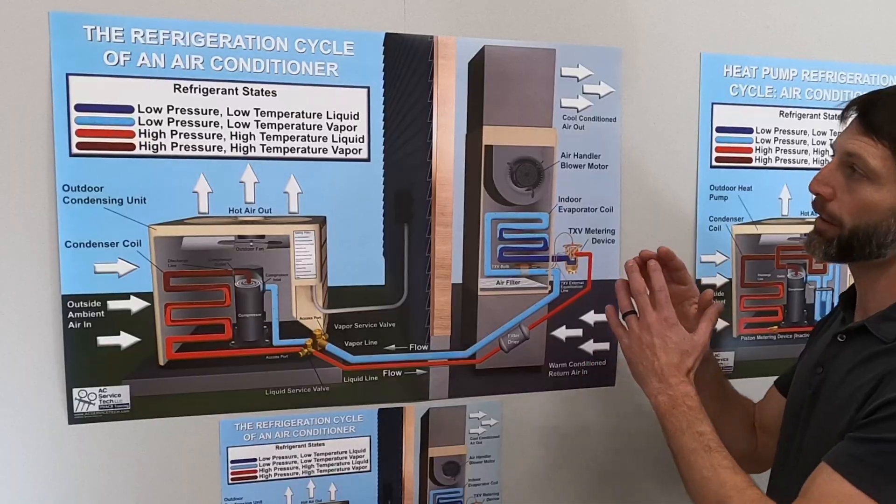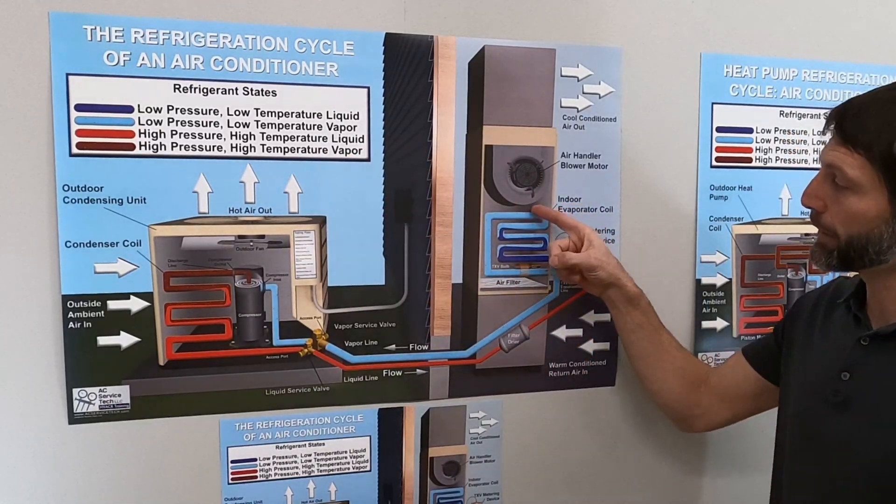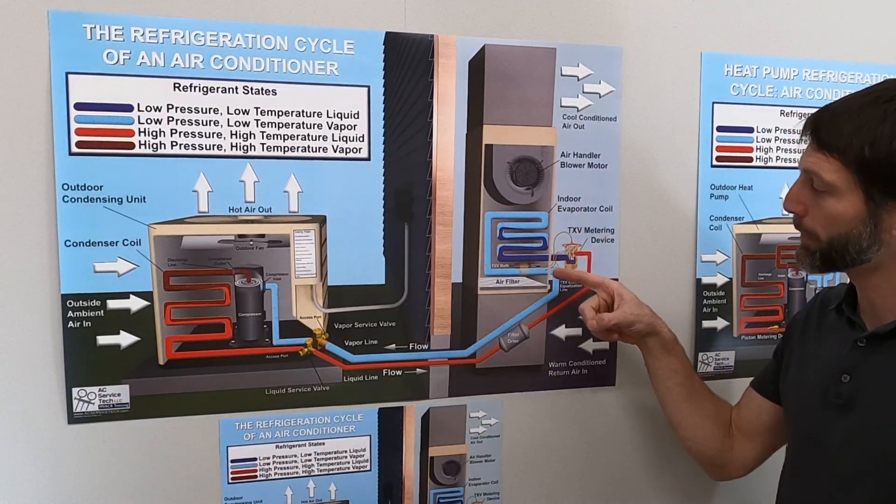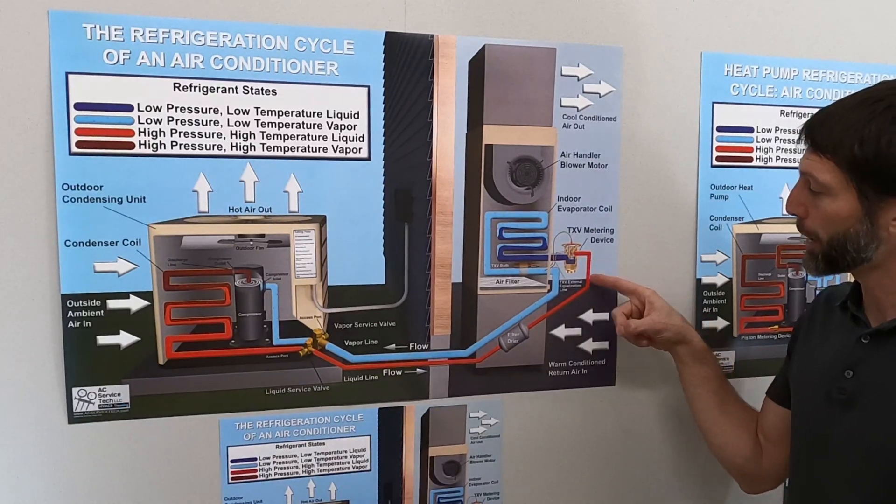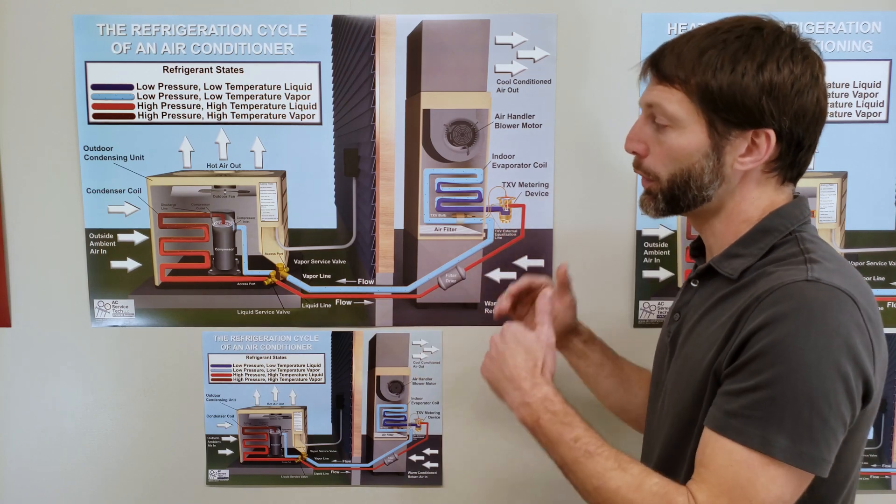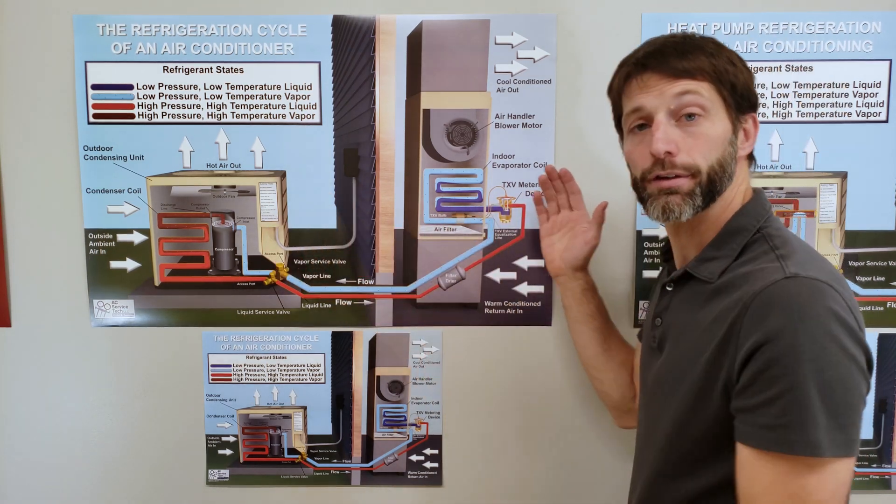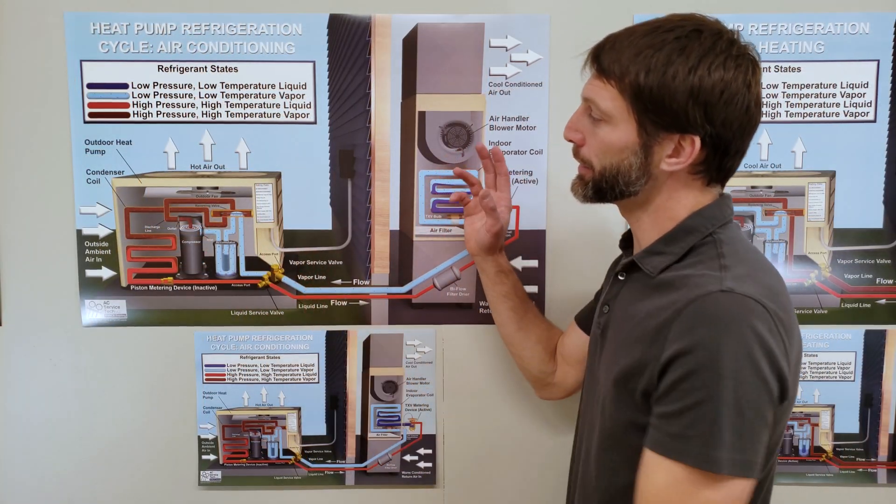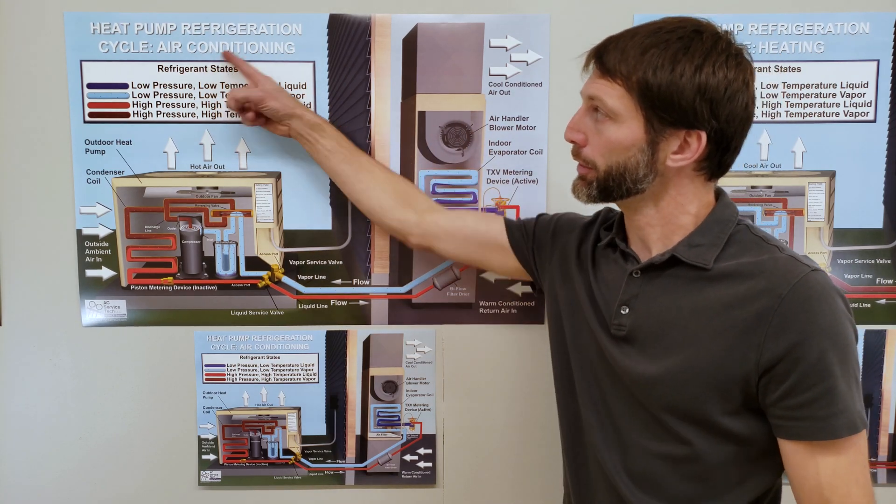You have your refrigerant states here and they're indicated by the colors, so we have our low pressure vapor, our low pressure liquid, our high pressure liquid, and our high pressure vapor. So you can determine what the pressure is at each point in the system. This one here is the heat pump refrigeration cycle in air conditioning mode.